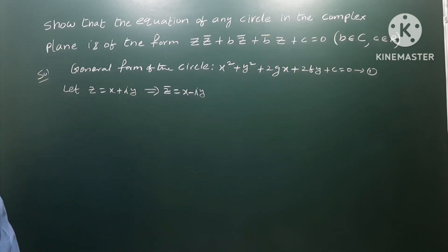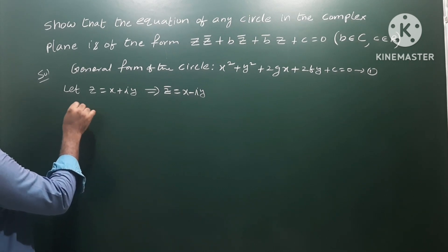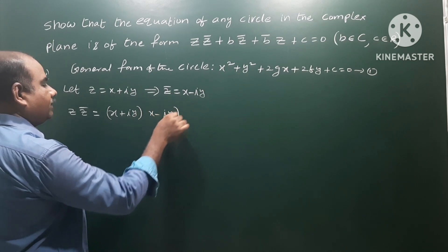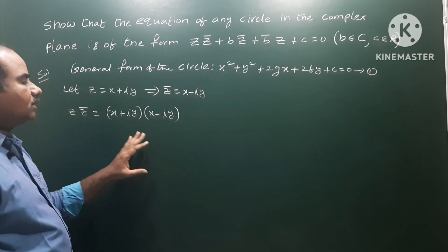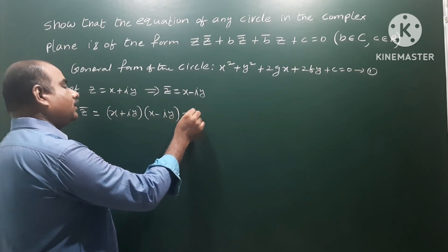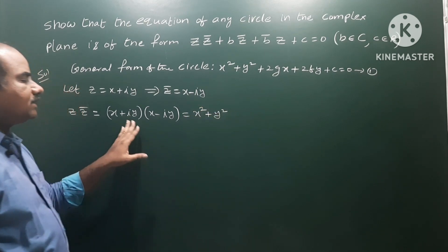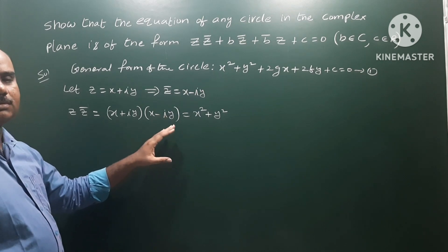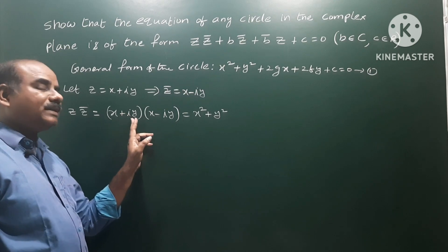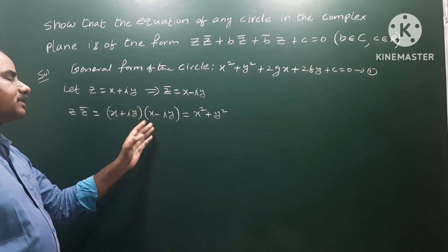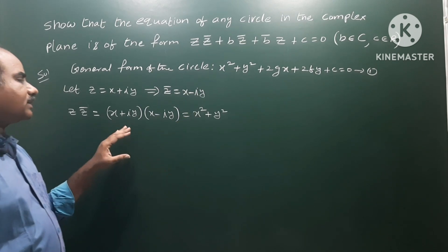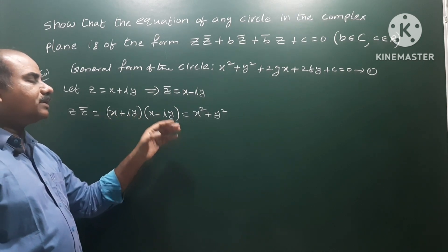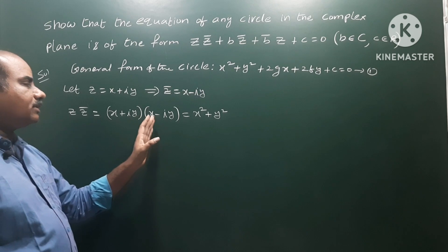Now z·z̄ means (x + iy)(x − iy). Using the identity (a + ib)(a − ib) = a² + b², we get x·z̄ = x² + y². So z·z̄ = x² + y².